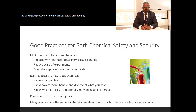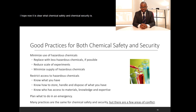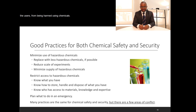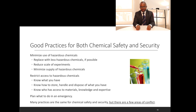The third good practice for both chemical safety and security is planning what to do when an incident occurs. Thank you very much. I hope it is now clear what chemical safety and chemical security are, and what their aims are in terms of protecting the environment and the users from being harmed. The first approach — safety — tries to protect the user from unintentional harm. The second approach — security — tries to protect our chemicals from being accessed by threats, persons who want to use the chemicals for ulterior motives.